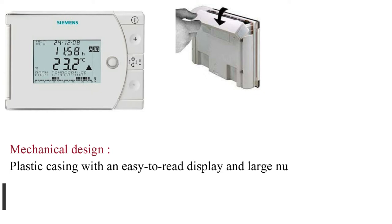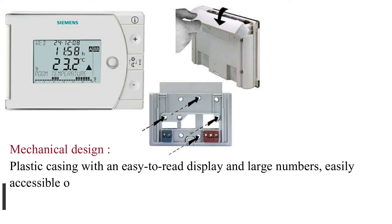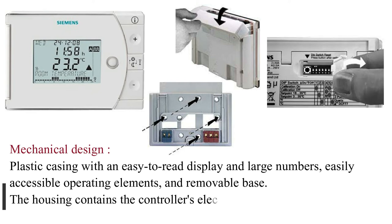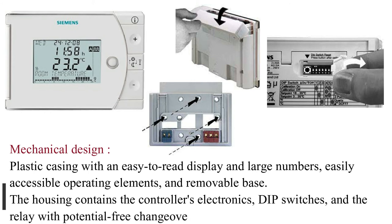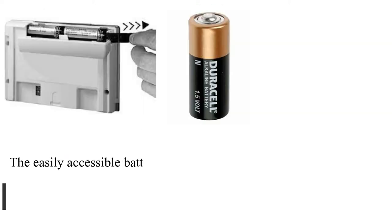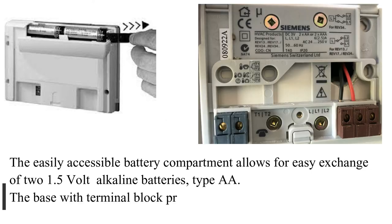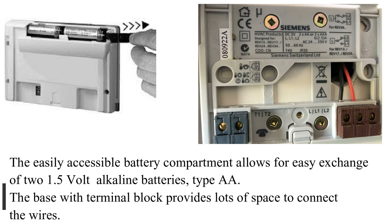REV 34 DC mechanical design: plastic casing with an easy-to-read display and large numbers, easily accessible operating elements, and a removable base. The housing contains the controller's electronics, DIP switches, and the relay with potential-free changeover contact. The easily accessible battery compartment allows for easy exchange of two 1.5-volt alkaline batteries, type AA.